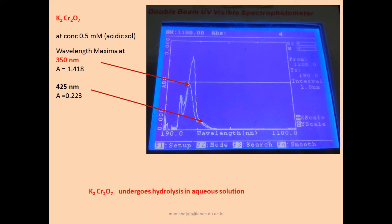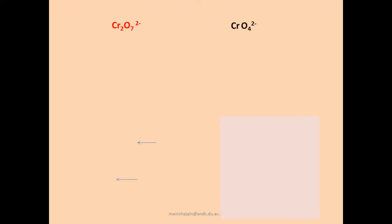In acidic medium — why was acidic solution chosen? Potassium dichromate tends to undergo hydrolysis in aqueous solution. The dichromate anion has a structure of two fused CrO₄ tetrahedrons sharing one common oxygen vertex — an oxygen-bridged structure. Both chromium atoms are in the +6 oxidation state. The bridging chromium–oxygen bond is the weakest bond in dichromate.